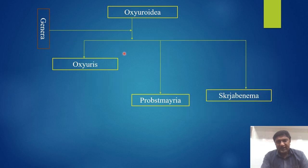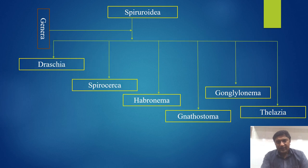Oxyuroidea have the following genera: Oxyuris, Probstmayria, and Skrjabinema. Spiruroidea have the following genera: Draschia, Spirocerca, Habronema, Gongylonema, Thelazia, and Cheilospirura.